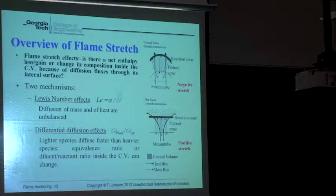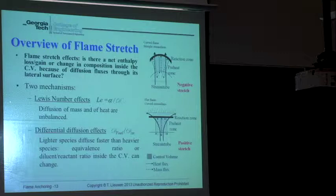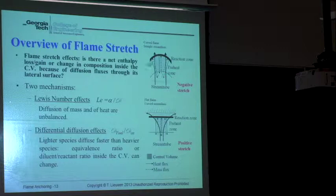Differential diffusion relates to the question of whether composition changes. If the diffusivity of the fuel and oxidizer differ, or when you account for real multi-component diffusion, your mixture composition can shift. For example, if your fuel is a mixture of propane and hydrogen, the hydrogen is much more diffusive than the propane. So for a hydrogen-air mixture in a diverging flow configuration, you have lots of hydrogen and air coming in and the hydrogen and air want to diffuse out the side of the control volume.